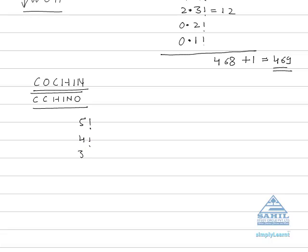4 factorial, 3 factorial, 2 factorial and 1 factorial. And plus 1. Now how many letters are there before C? There is no letter before C. So we have to put 0 over here and cancel out C also.